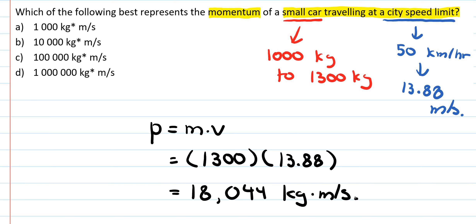Looking at the four options A, B, C, and D, option B is a good approximation for a small car going at city speed limits. Options A, C, and D are fairly off by quite a bit. So option B is a very good approximation for the momentum of a small car traveling at city speed limits.